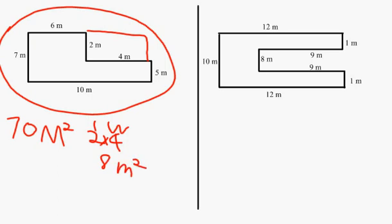You subtract 8 from 70 and get 62. The area of the irregular polygon is 62 meters squared.